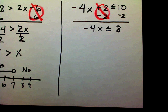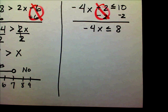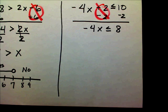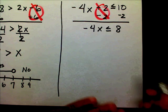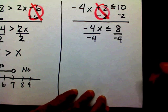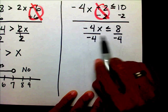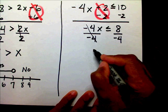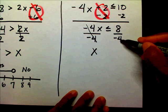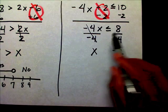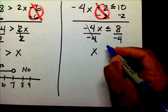Now we need to isolate the variable, so we need to get rid of that negative 4. In our problem before, we divided by a positive number. But with an inequality, when you divide or multiply by a negative number, you switch your sign. Your 4's cancel, leaving x on the left, and 8 divided by negative 4 is negative 2.